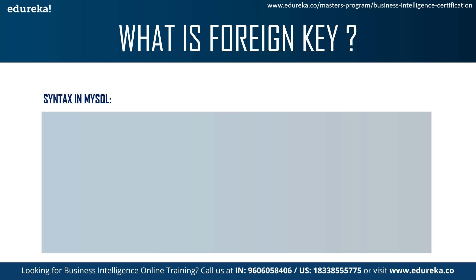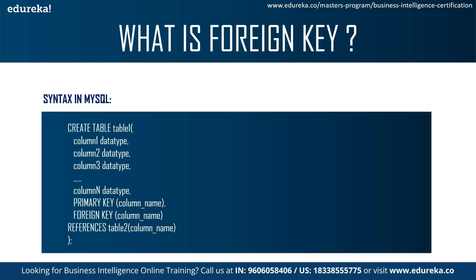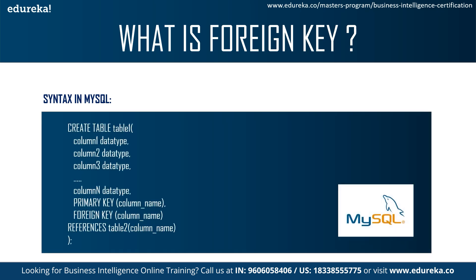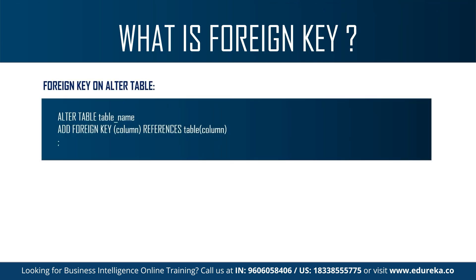Now let's look at the syntax of a foreign key. It is almost similar to the primary key syntax, but it also has a REFERENCES command. The REFERENCES command refers to the primary key of another table — it gives a reference from one table to another. Similar to the primary key, we also have ALTER commands for foreign keys: ALTER TABLE with the table name, then ADD FOREIGN KEY with the column, referencing the primary key of another table.